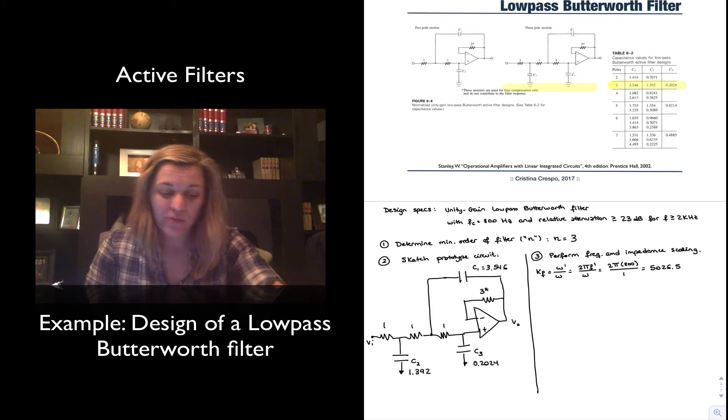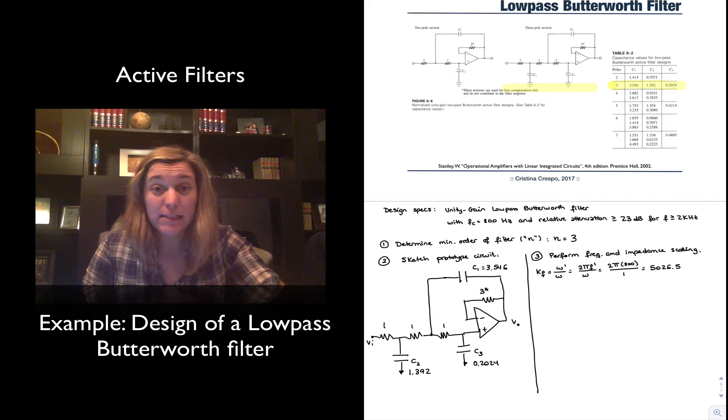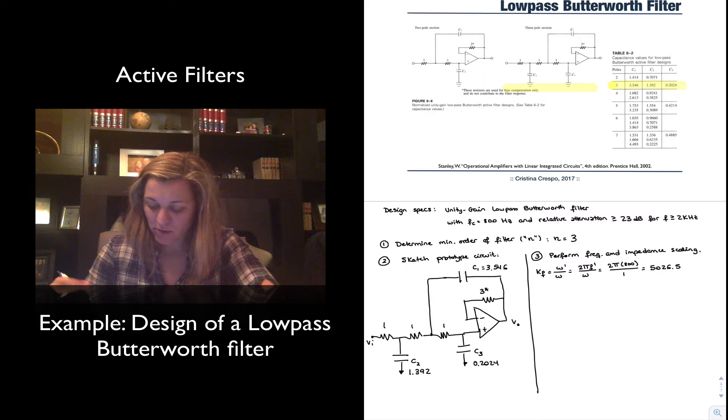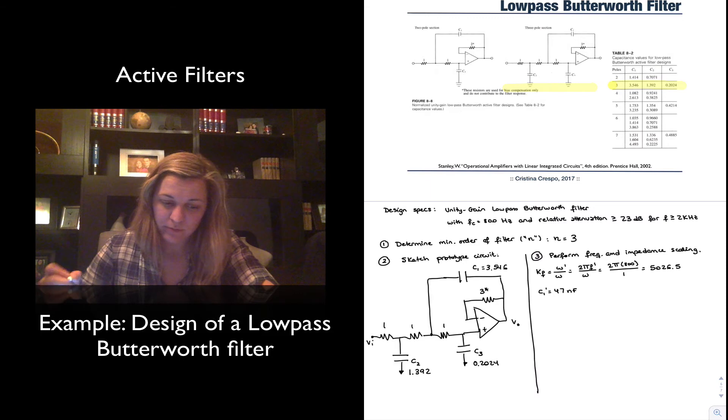Now I need to figure out my impedance scaling, but for that I'm going to need to select at least a capacitor value. And so C1 is going to be my largest capacitor. I can see C1 is obviously about three times the value of C2, and C2 is also several times larger than C3. So I'm going to select my C1 prime to be equal to 47 nF. And from here I'm going to derive my impedance scaling factor.